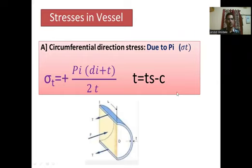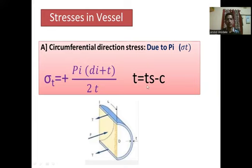Next are the stresses in the vessel. The first stress in an unfired pressure vessel is the circumferential stress, which occurs due to internal pressure PI. The circumferential stress sigma_T = PI × (DI + T) / (2T), where DI is the inner diameter and T is the effective thickness (shell thickness minus corrosion allowance).